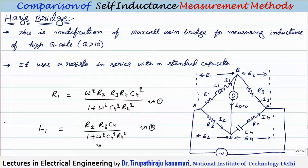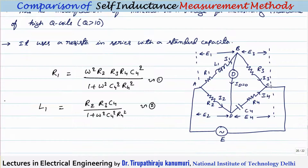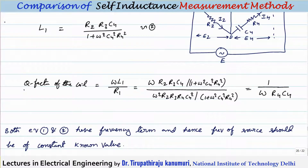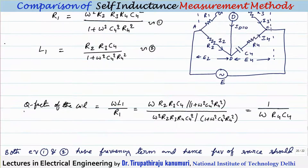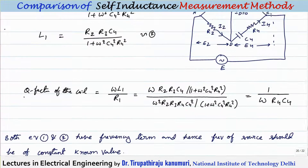The balance equations contain a frequency term, which is why the Hays bridge is not used for medium range Q values. The Q factor of the coil equals 1/(ω × R4 × C4), and since both balance equations contain a frequency term, the source frequency must be known accurately.